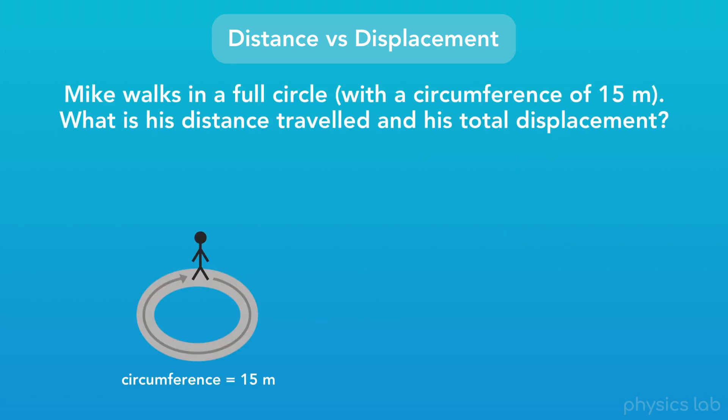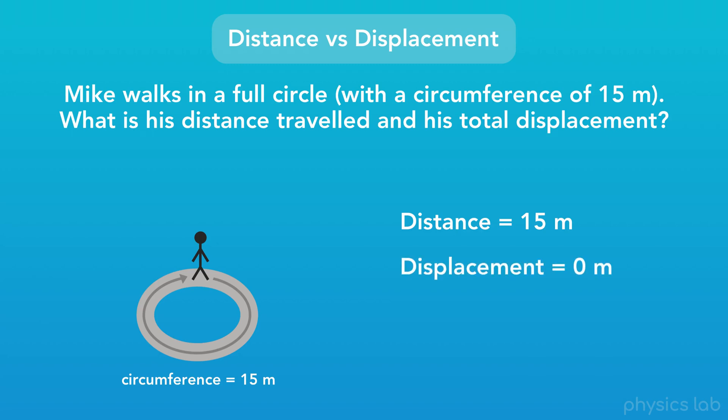Here's another important distinction between distance and displacement. Let's say that Mike walks in a full circle, with a circumference of 15 meters, and ends up right where he started. What is his distance traveled, and what is his total displacement? Well, his distance traveled, which is the actual path that he covered while he was walking, is 15 meters — that's the circumference of his circle, or the length of his path. However, his total displacement during this journey is zero.